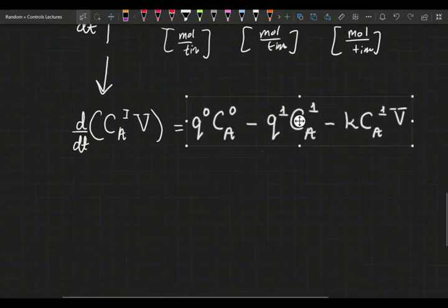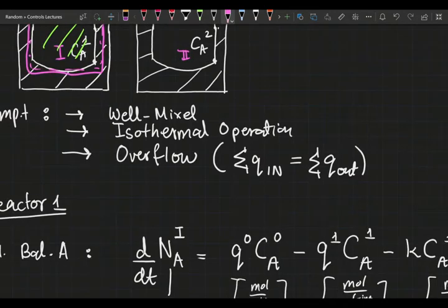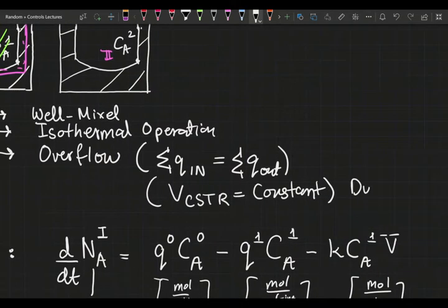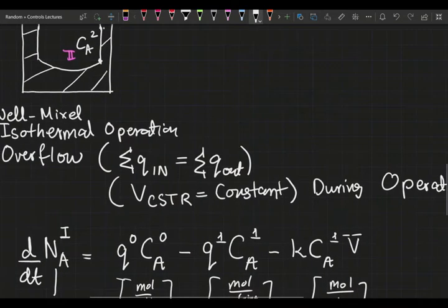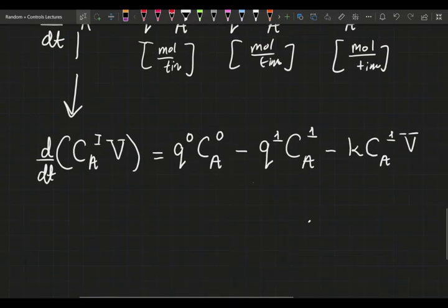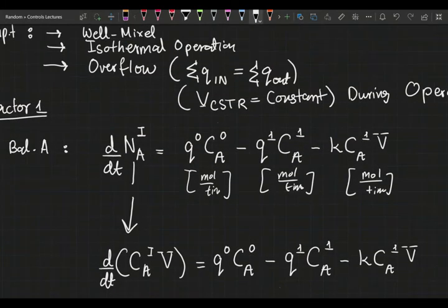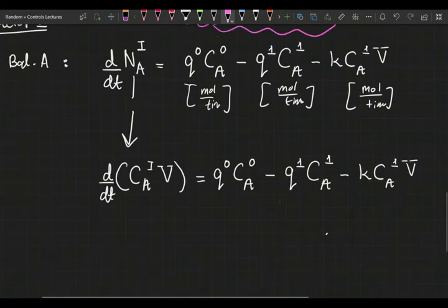Since we have an overflow reactor, one of our assumptions is overflow. The overflow system is that the volume of CSTR is constant during operation. The volume will obviously be changing, it will be rising or falling during startup or shutdown, but we're talking about normal operation for now. We're trying to model disturbances during the operation.